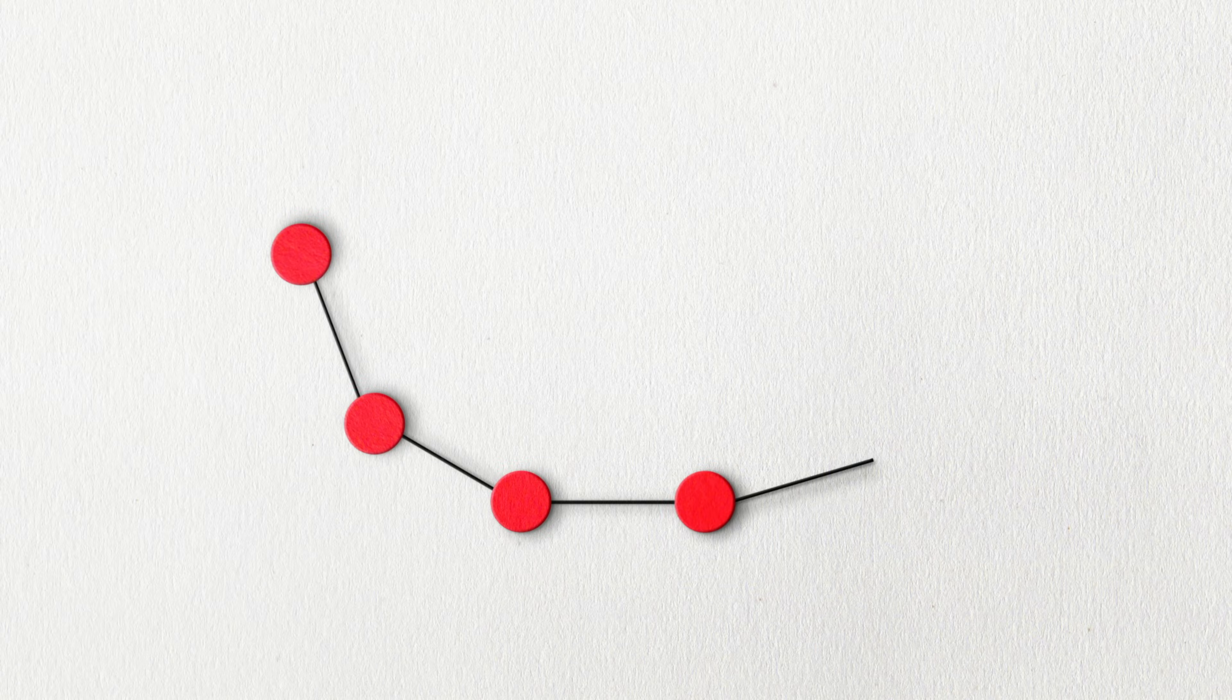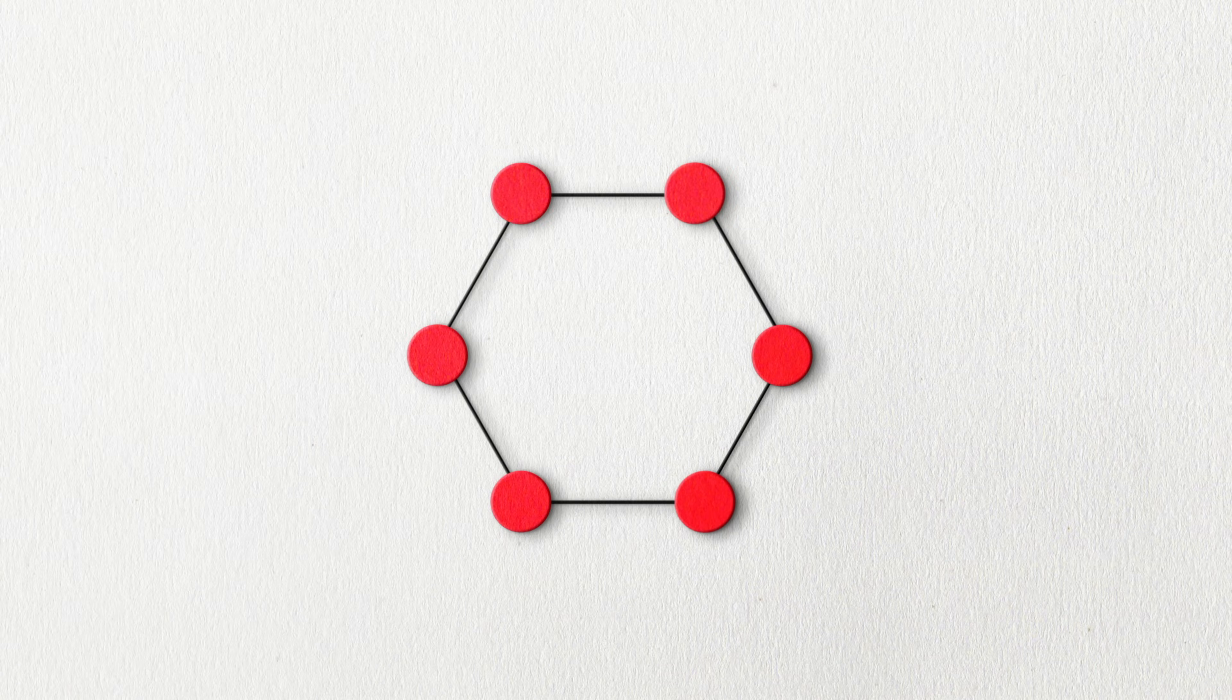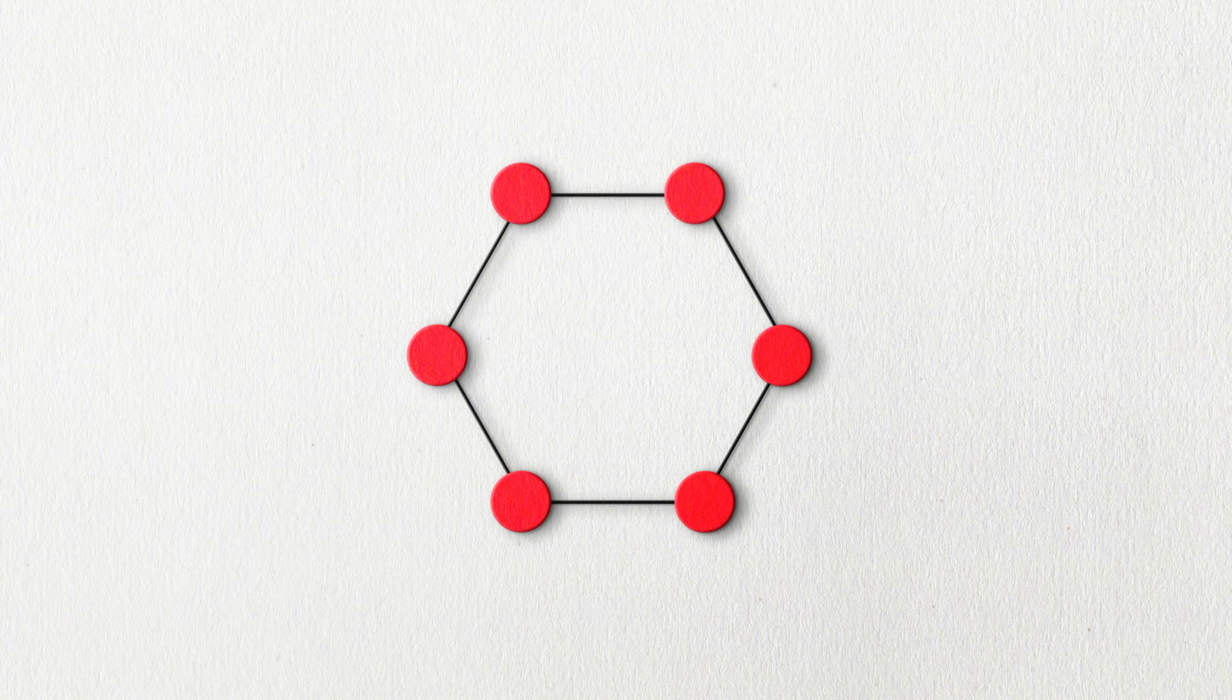We said that carbon can bind to itself, right? So the ends of those carbon chains can flip around and bind together, thus forming rings. For example, a ring containing six carbons and their associated hydrogens and hydroxyl groups is the very well-known and simple sugar known as glucose.